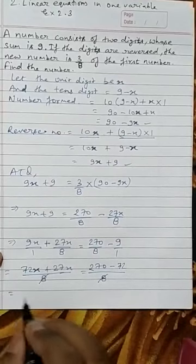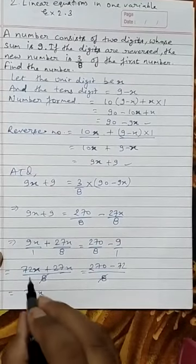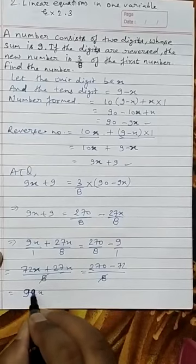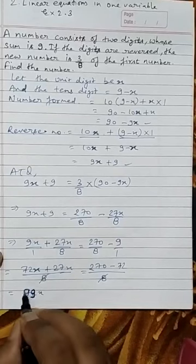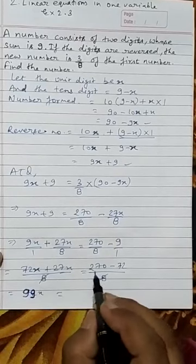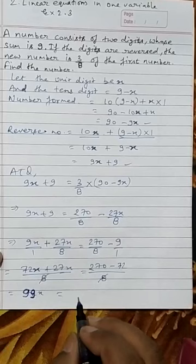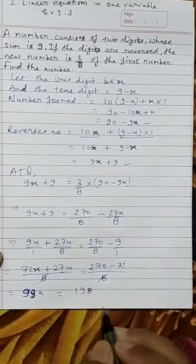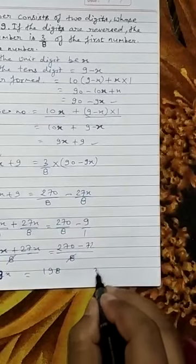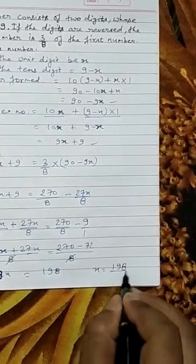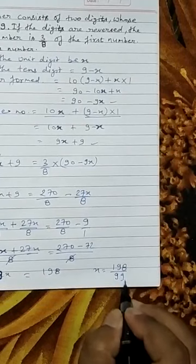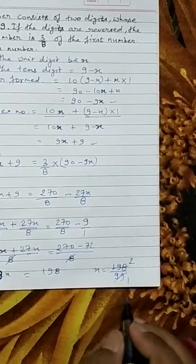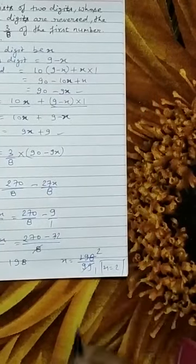After the bases cancel, we add the x terms to get 99x. So 99x equals 198, giving the value of x as 2.